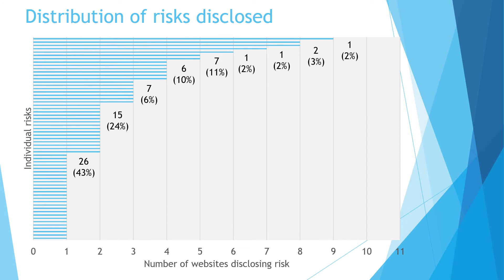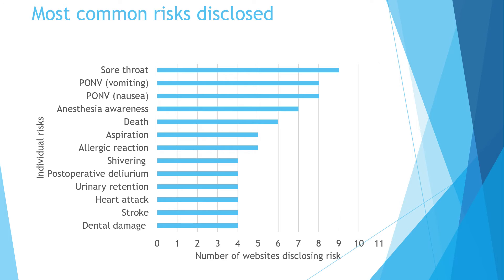The next figure is a plot showing all risks disclosed and how many times each risk was disclosed by every website. There are two big takeaways: first, nearly half of the overall 61 identified risks were identified by only one of the 11 websites. Second, not a single risk was disclosed by all 11 websites together. This figure also shows the most common risks disclosed across all 11 websites, demonstrating a very high disparity in severity and prevalence. The most stated risks appear to be common and mild side effects such as nausea, sore throat, and vomiting, while the rarest and more severe risks — such as death and anesthesia awareness — are obviously very severe but definitely not as common as post-anesthetic sore throat or post-operative nausea and vomiting.